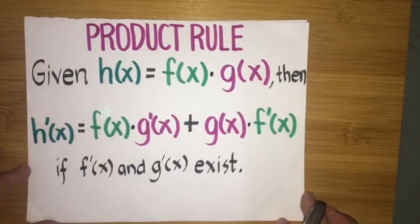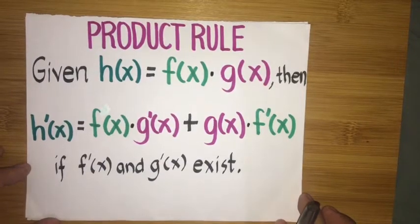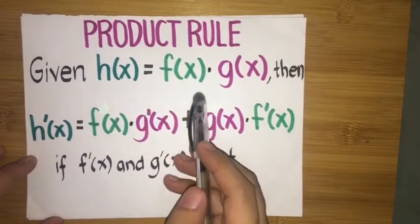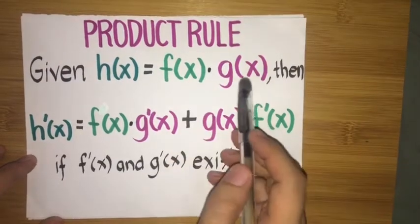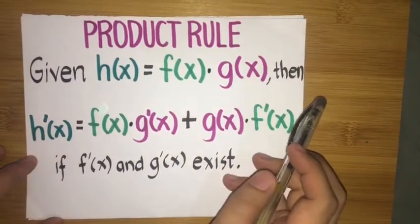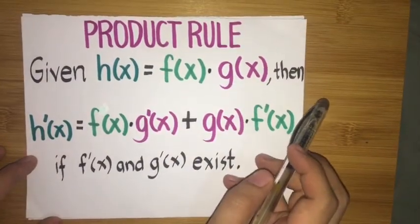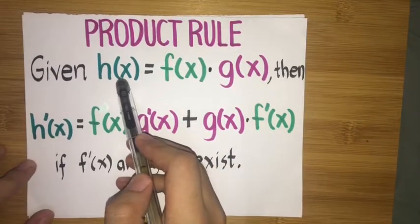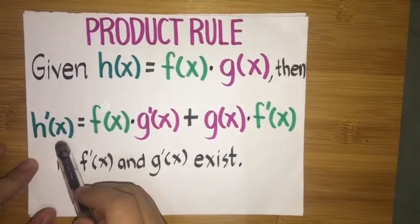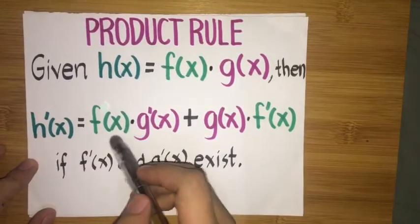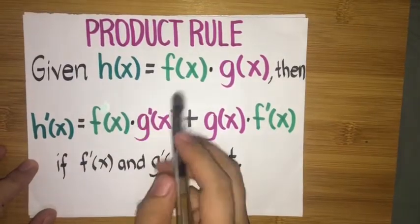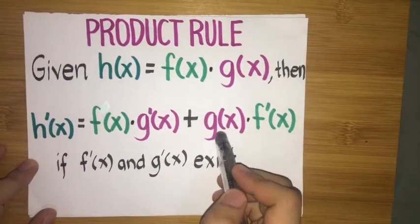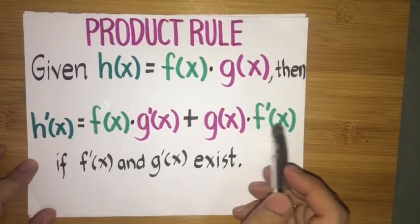So let's say we have a given function h of x, which is a product of two different functions f of x and g of x. Then we can apply the product rule to find the derivative of h of x. So we will have h prime of x equal to f of x times g prime of x plus g of x times f prime of x.